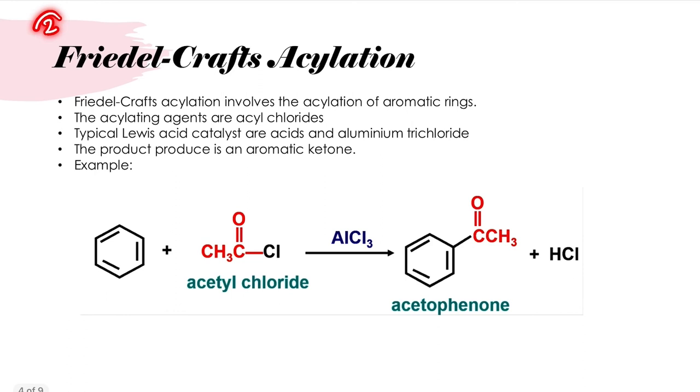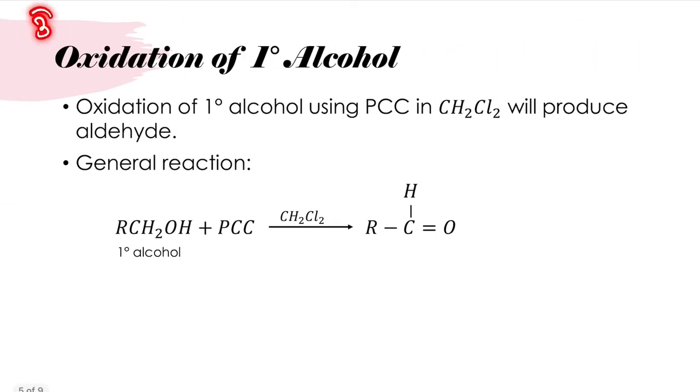The second reaction we already learned in the benzene chapter, which is Friedel-Crafts acylation. This involves the acylation of aromatic rings. The acylating agents are acyl chlorides, typically with acid catalysts such as acids and aluminum trichloride, and the product produced is aromatic ketone. This is an example of Friedel-Crafts acylation.